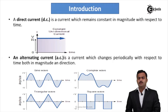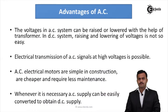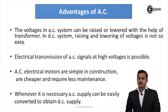An AC waveform is defined as a change in magnitude as well as direction periodically with respect to time. Why study AC over DC? There are some important advantages. First, voltages in an AC system can be raised or lowered by using a device called a transformer, which we will study in a later module.